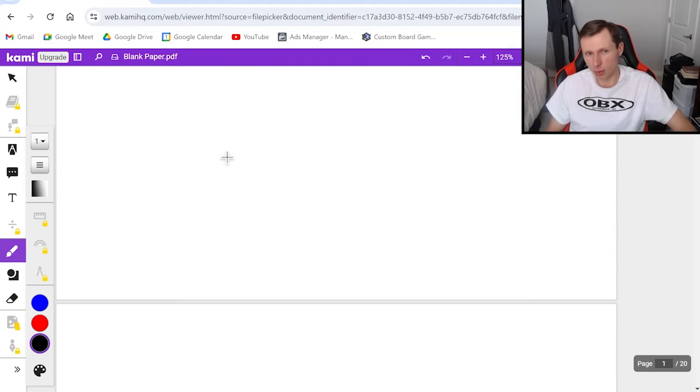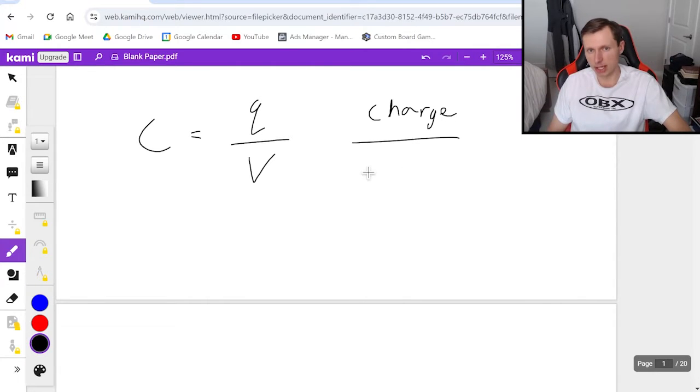Then we have another equation. This one is going to relate the charge and the voltage. C equals Q over V. In other words, charge divided by voltage, or you could say electric potential, because that's the same thing as voltage.